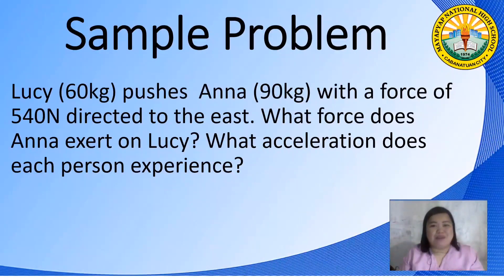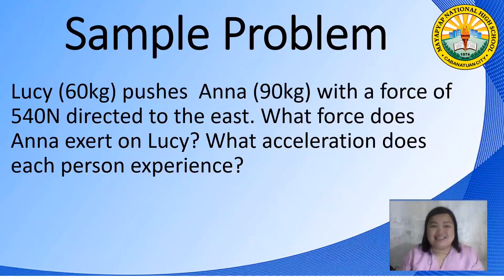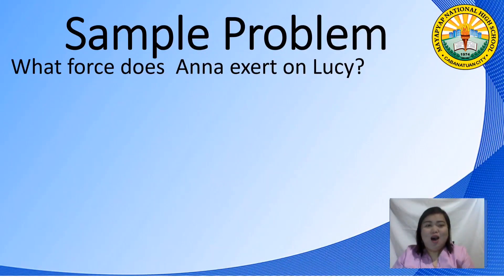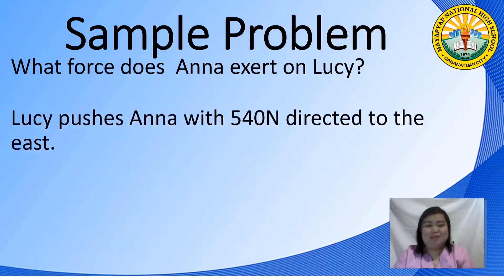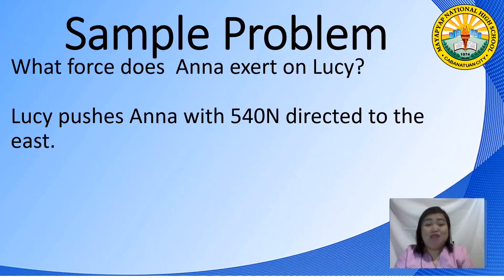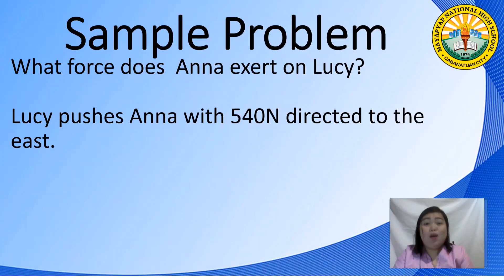For our sample problem: Lucy, 60 kg, pushes Anna, 90 kg, with a force of 540 N directed to the east. What force does Anna exert on Lucy, and what acceleration does each person experience? To answer our first question: the third law of motion says the magnitude of the two forces should be the same while the direction should be opposite. So if Lucy pushes Anna with 540 N, Anna pushes Lucy with 540 N in the opposite direction.